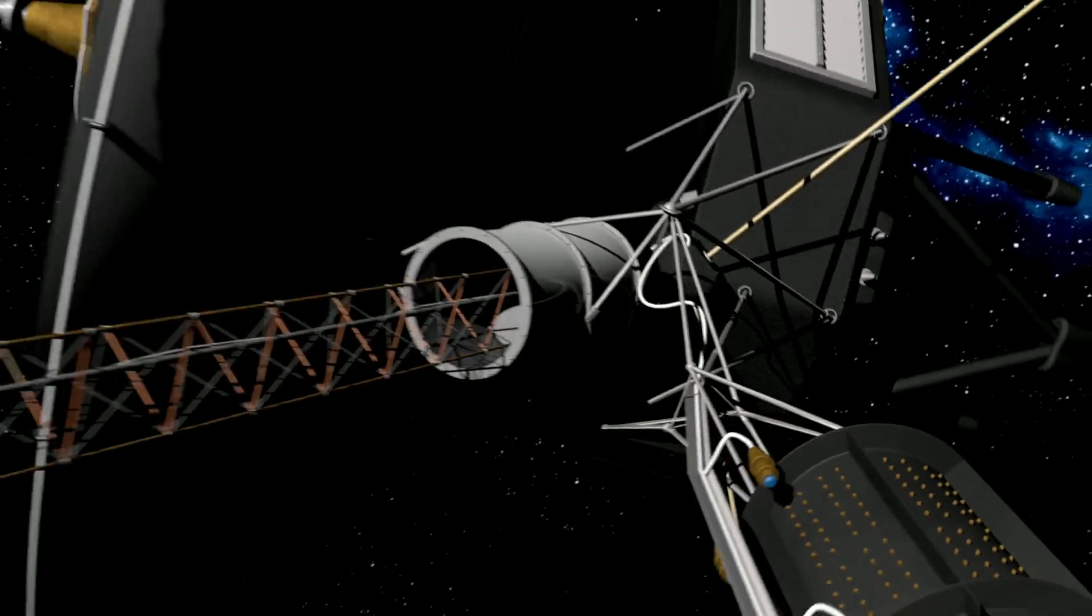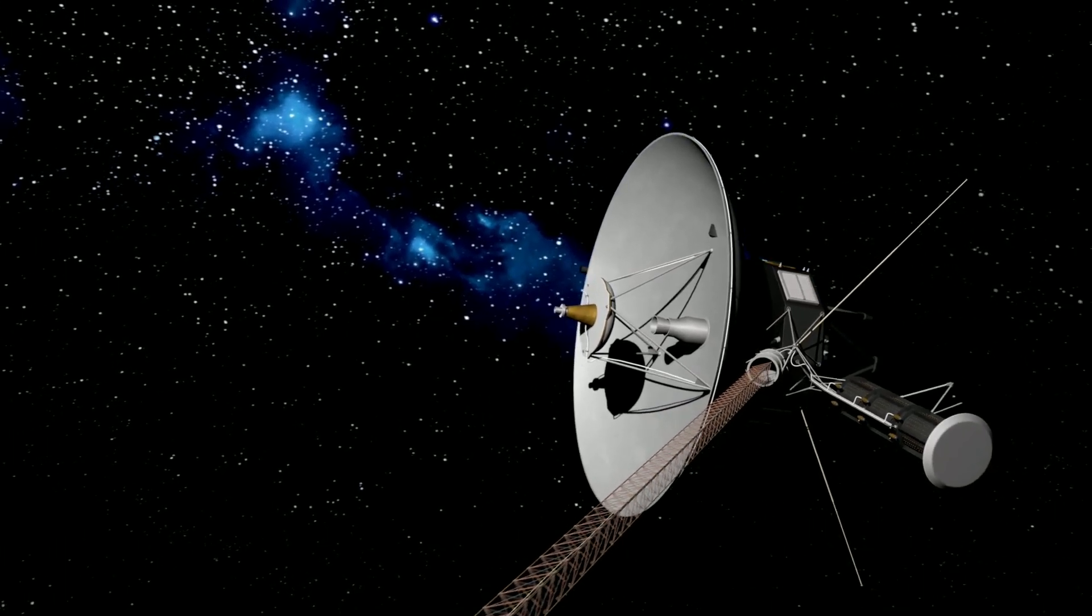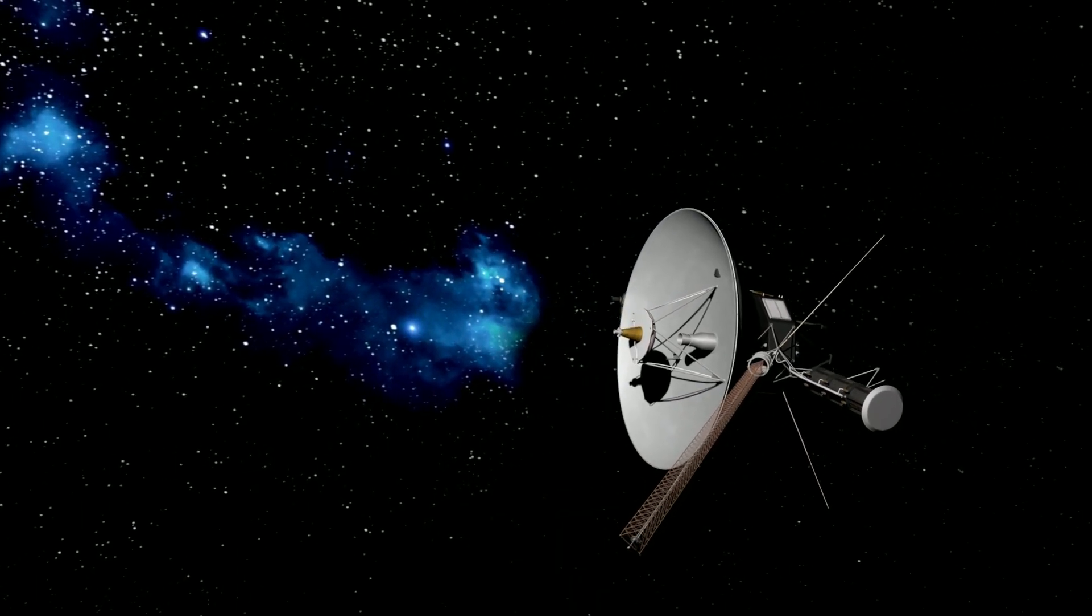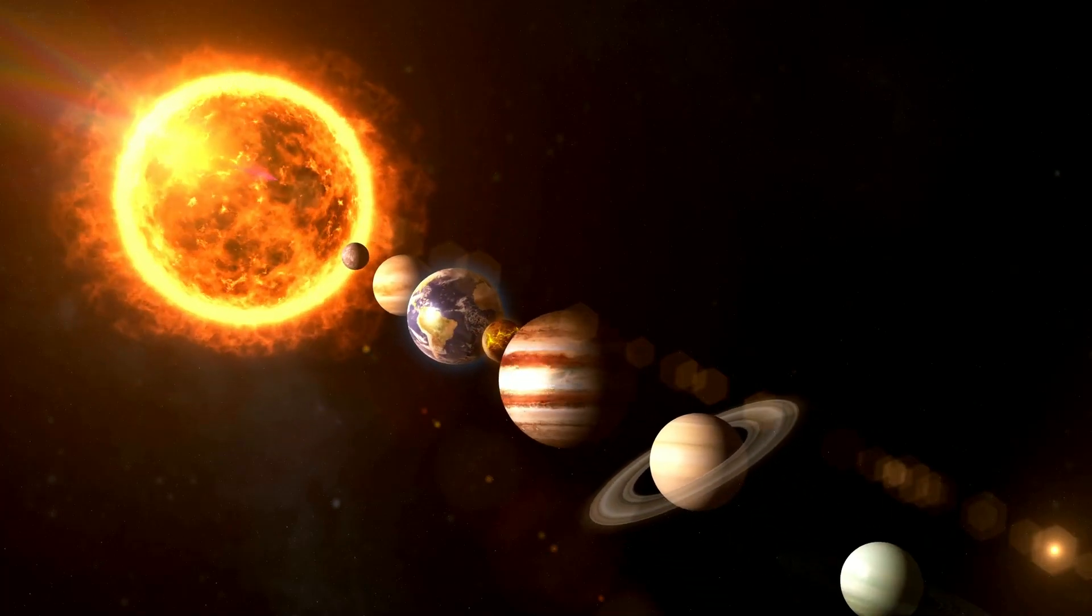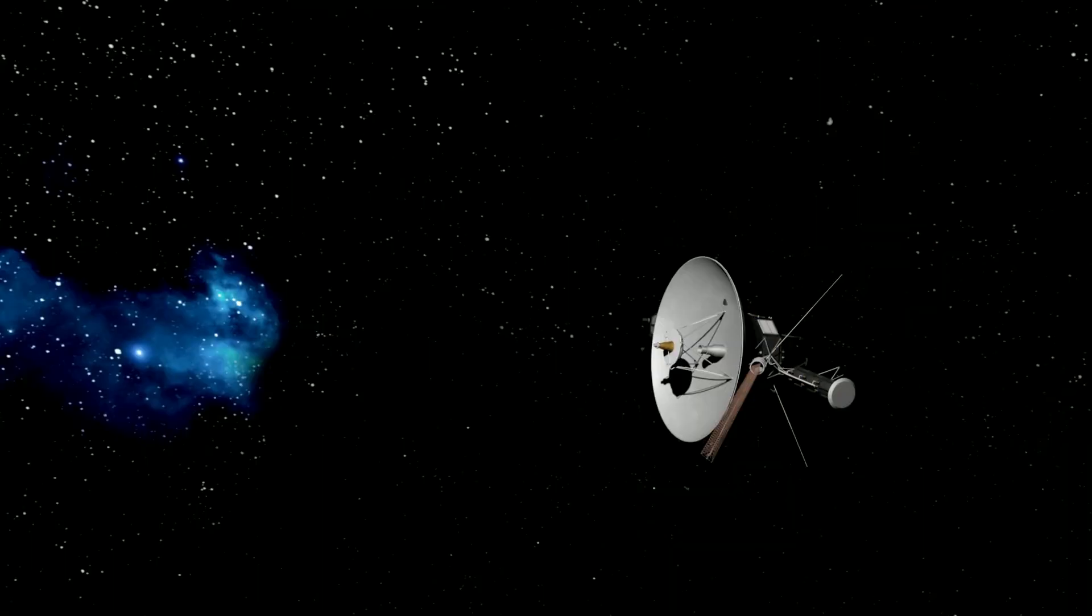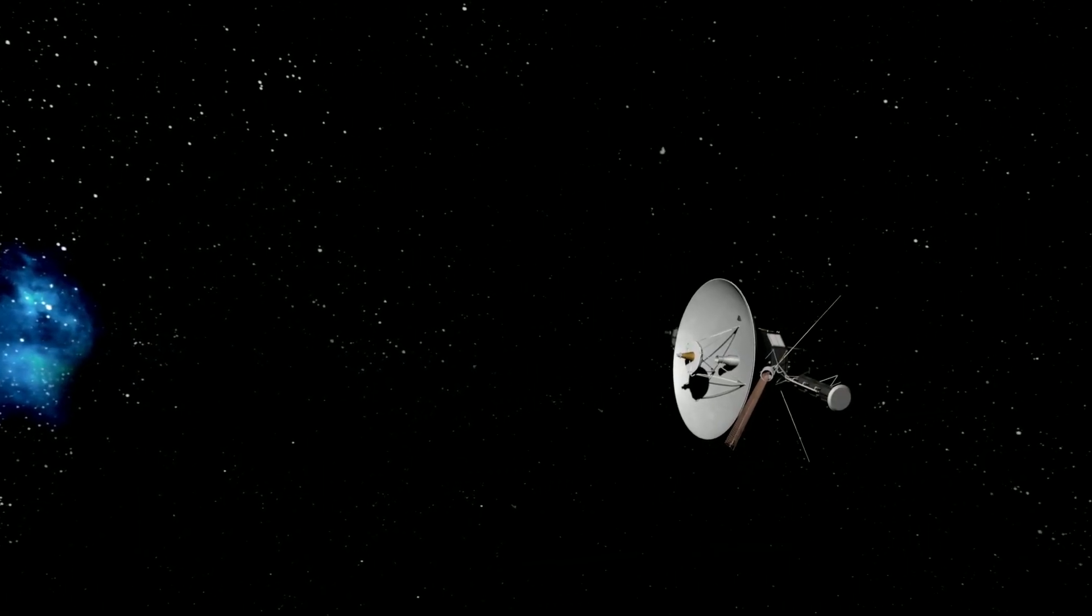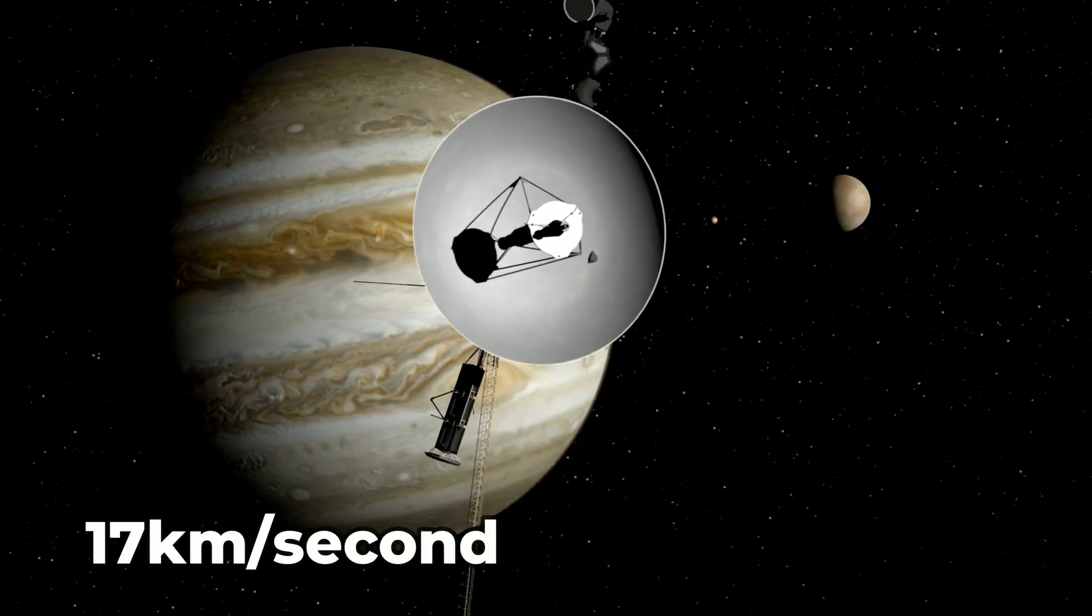Voyager 1 has now traveled 162 astronomical units from us. 1 AU is the distance between the Sun and Earth. This distance is so vast that it would take approximately 22 hours and 28 minutes to reach it at the speed of light, and it's still advancing into interstellar space at a speed of 17 kilometers per second.